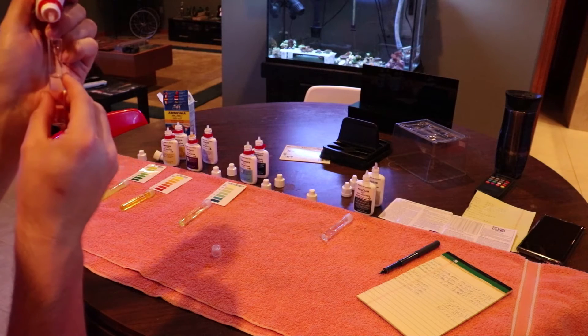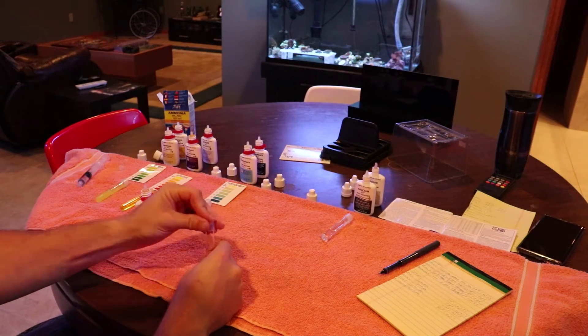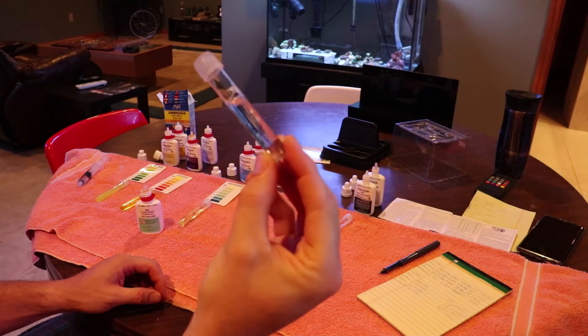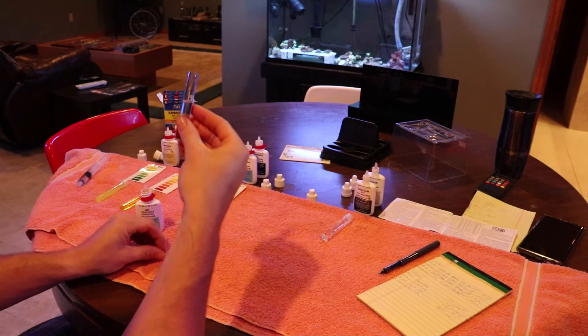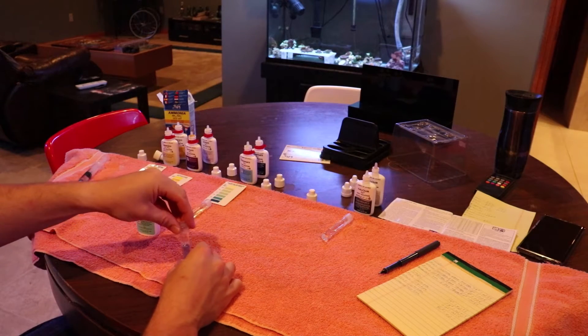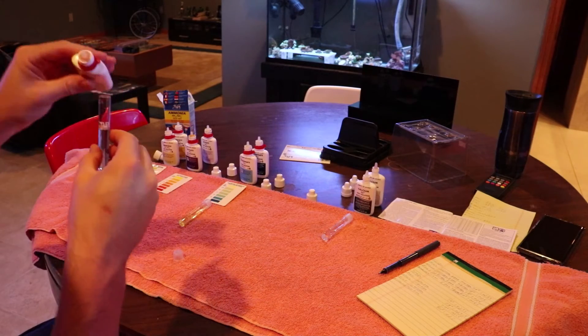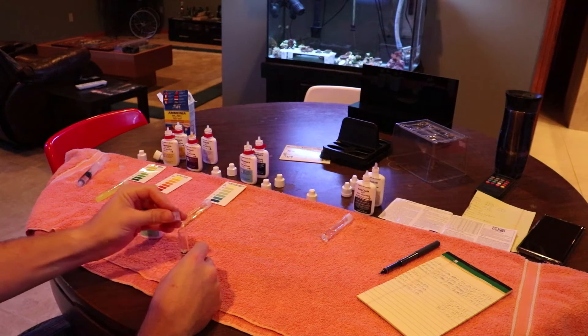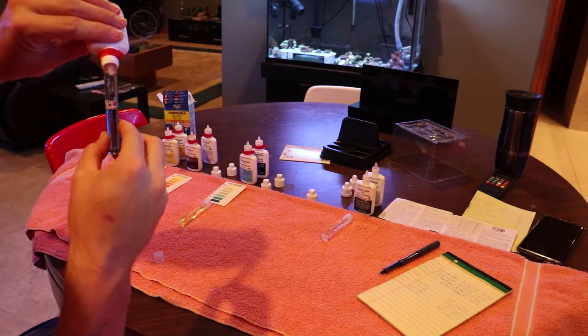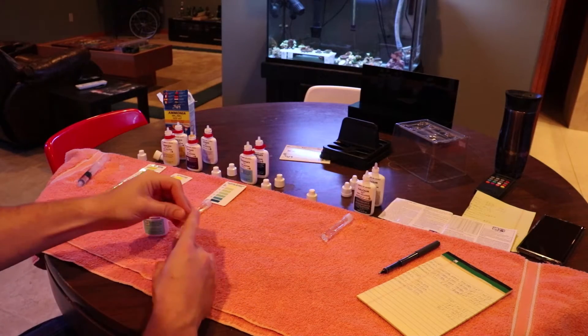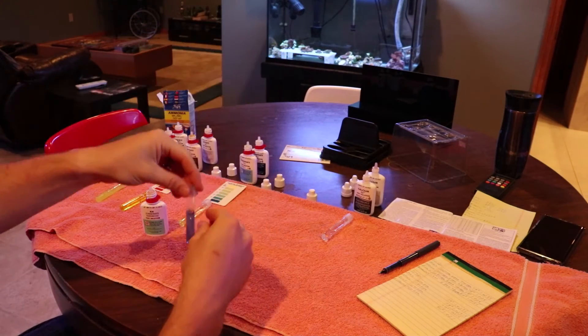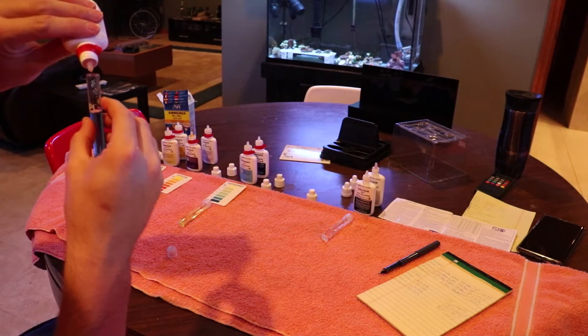We'll move on and test dKH next, which is our alkalinity. You want your alkalinity, your dKH, to be between 8 and 12. That's what I shoot for. You're going to add one drop to your vial and it should turn a light blue color. If it turns yellow, your dKH is less than one, which is not good. As long as it turns blue with one drop you're good. After that you're going to add one drop at a time. You're going to add a drop, put the cap on, shake it. Add a drop, put the cap on, shake it. You're going to keep track of how many drops it takes to turn from a blue color as you can see here to a pale yellow color. When the water turns to a pale yellow, the test is over.